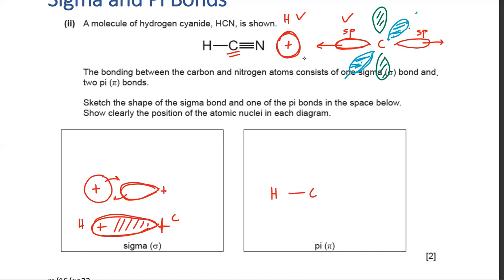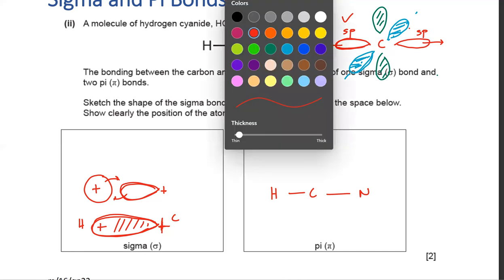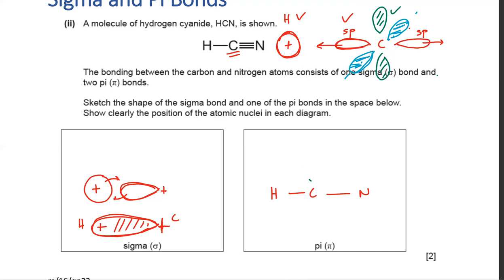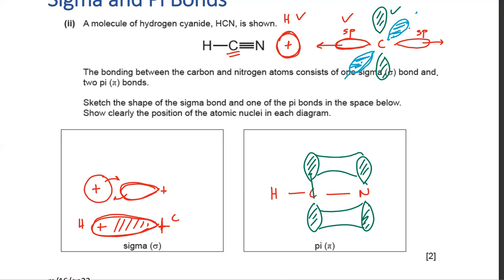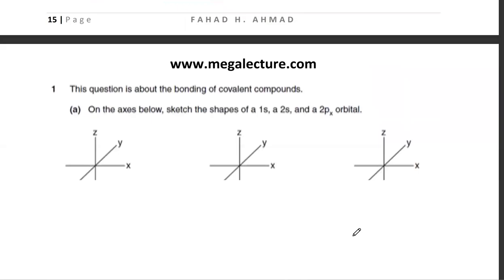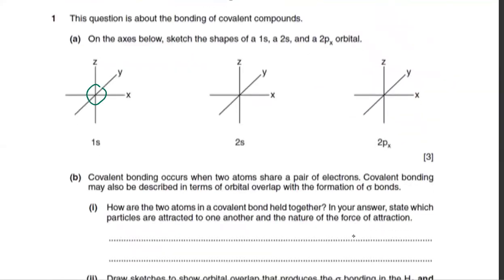You're also asked to sketch a 1s orbital (small sphere), a 2s orbital (bigger sphere), and a 2px orbital (dumbbell-shaped along the x-axis). How are two atoms in a covalent bond held together? The shared electrons in the bond are attracted by the positive nuclei of both atoms — the force of attraction is electrostatic.